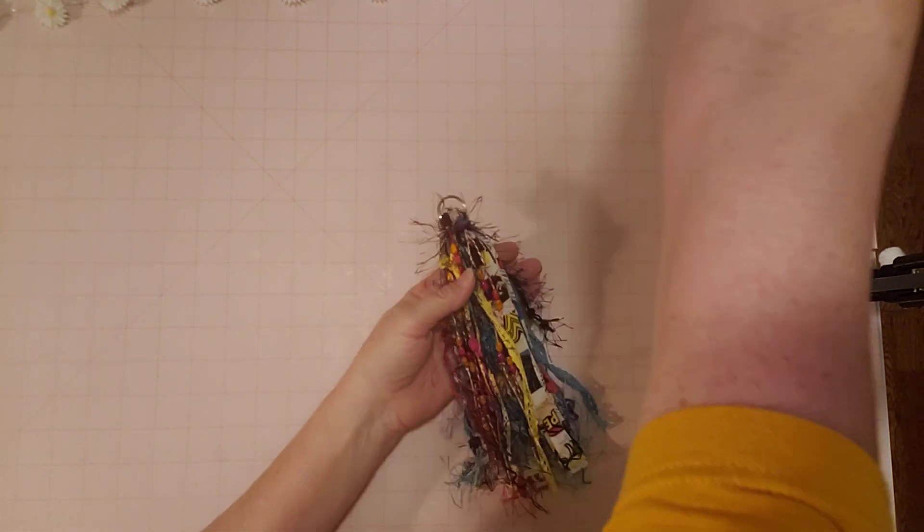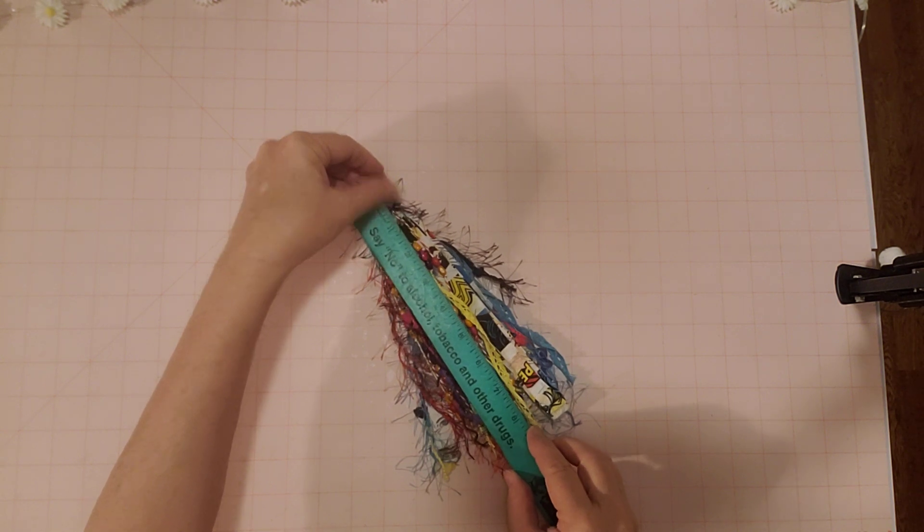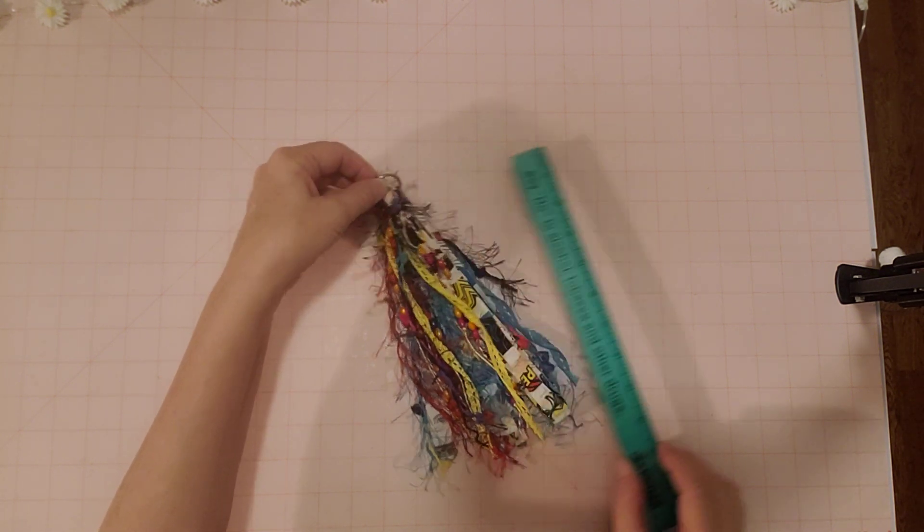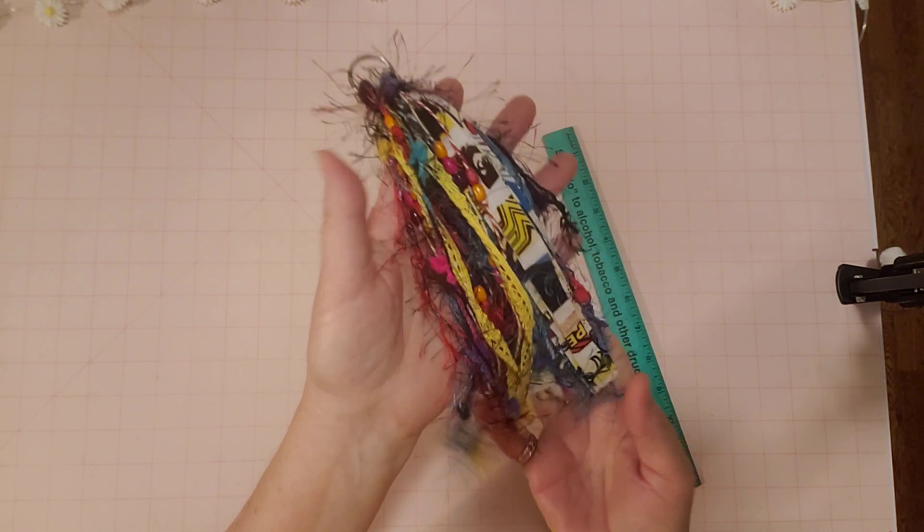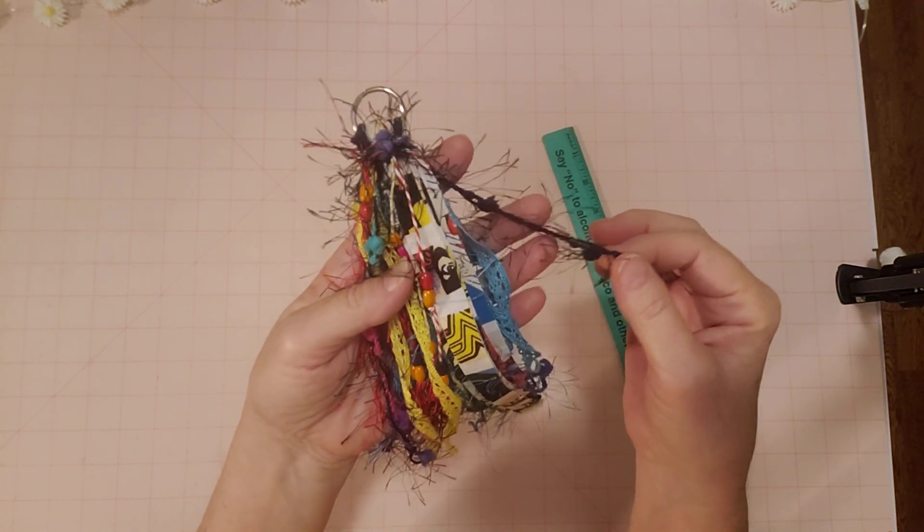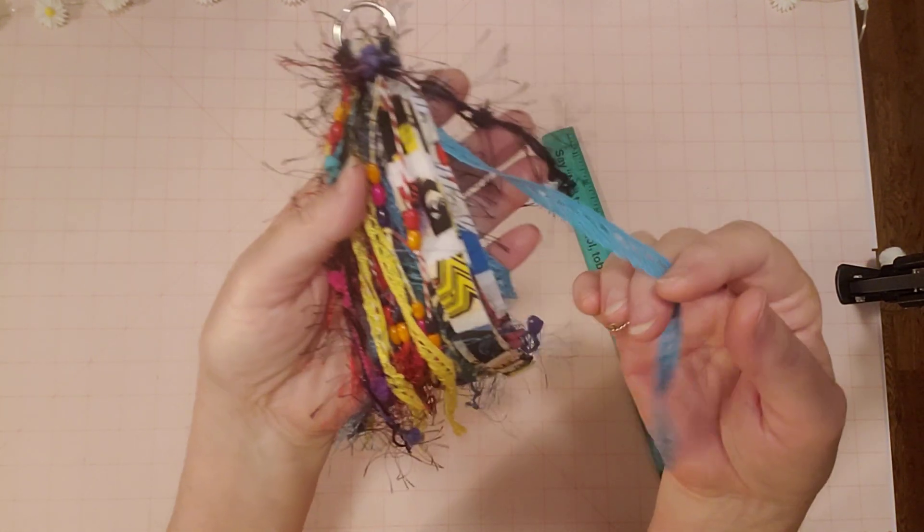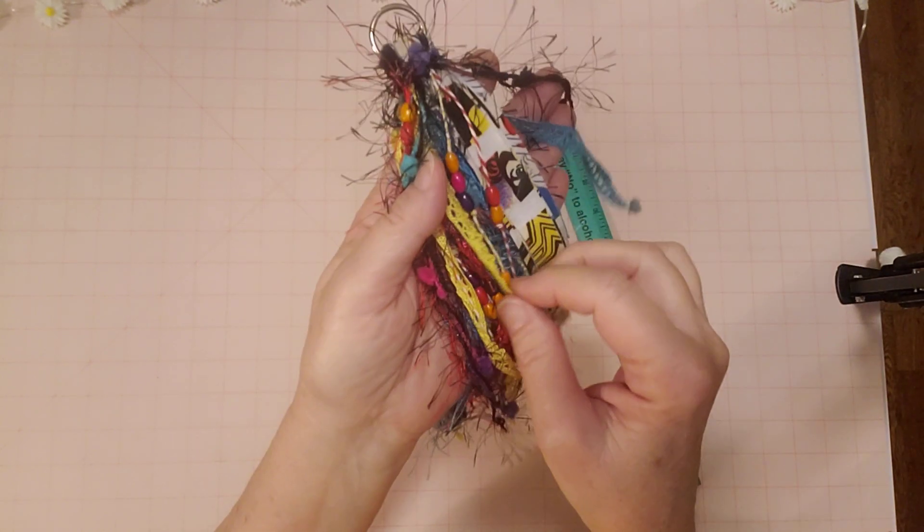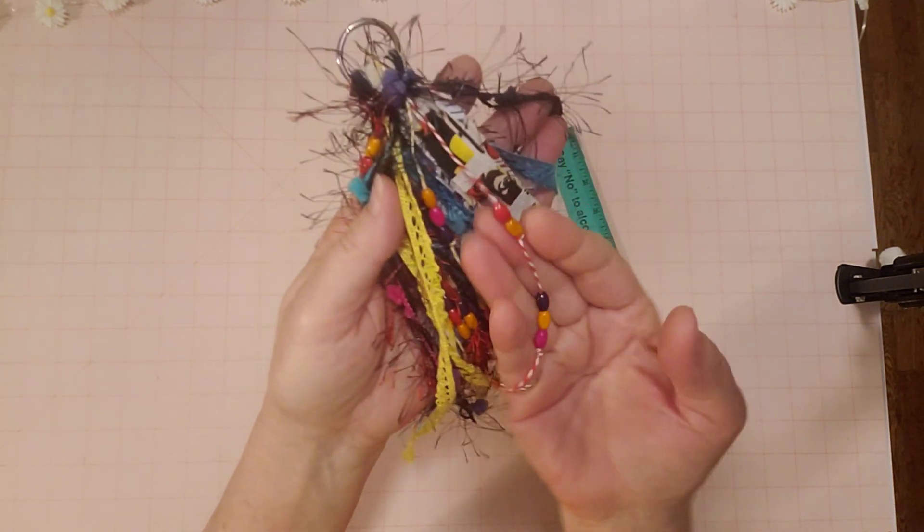It is nine inches long from the top of the tassel right here. It has different fibers and things. It has different eyelash trims like here's one. It has some crochet trims, there's some blue and yellow, and then it has some Baker's twine with wood beads, different colored wood beads.